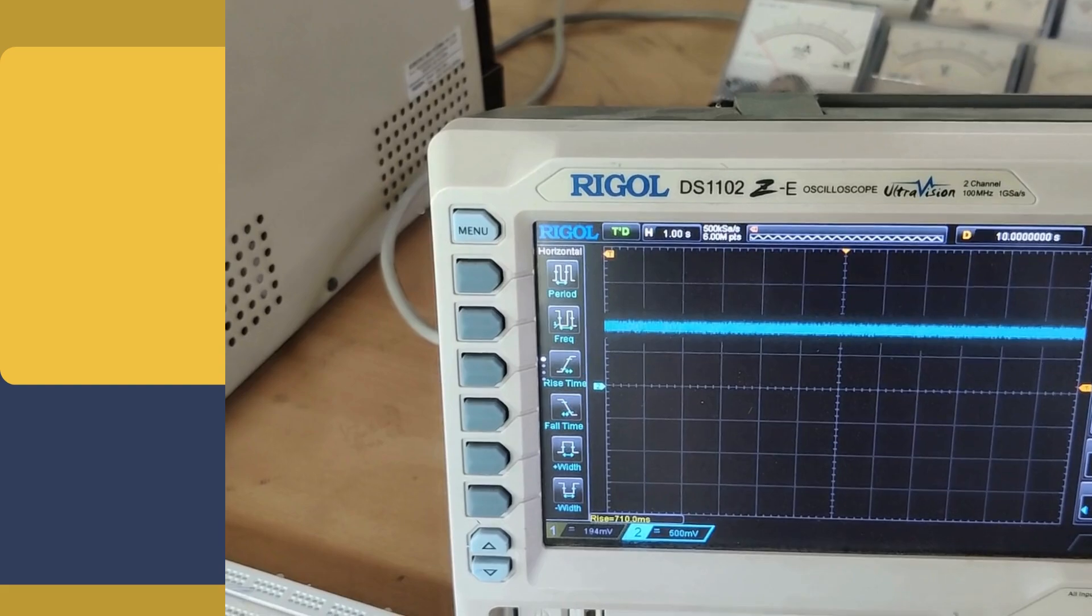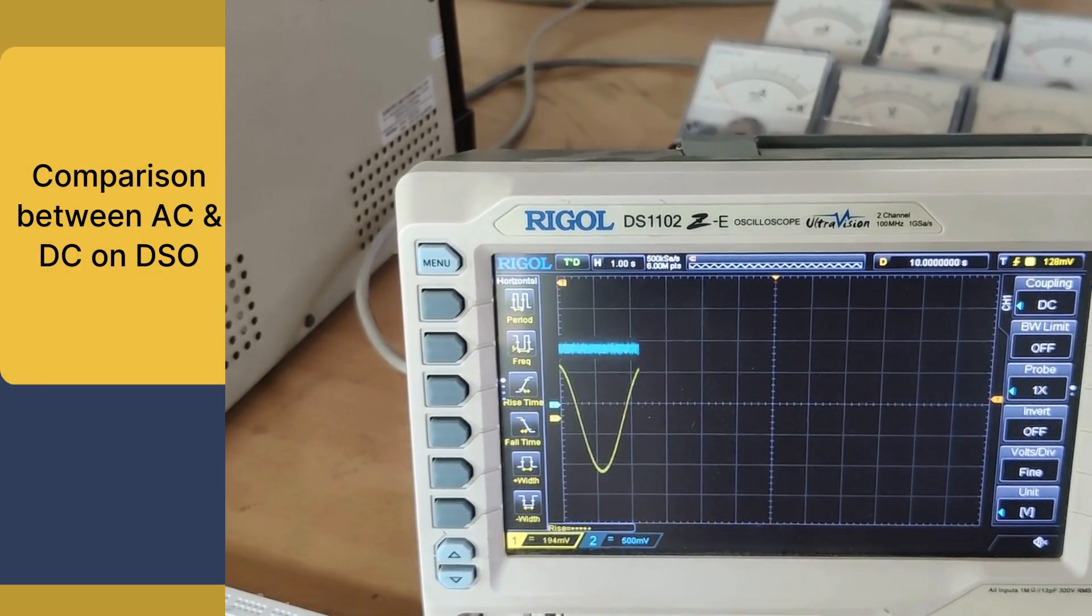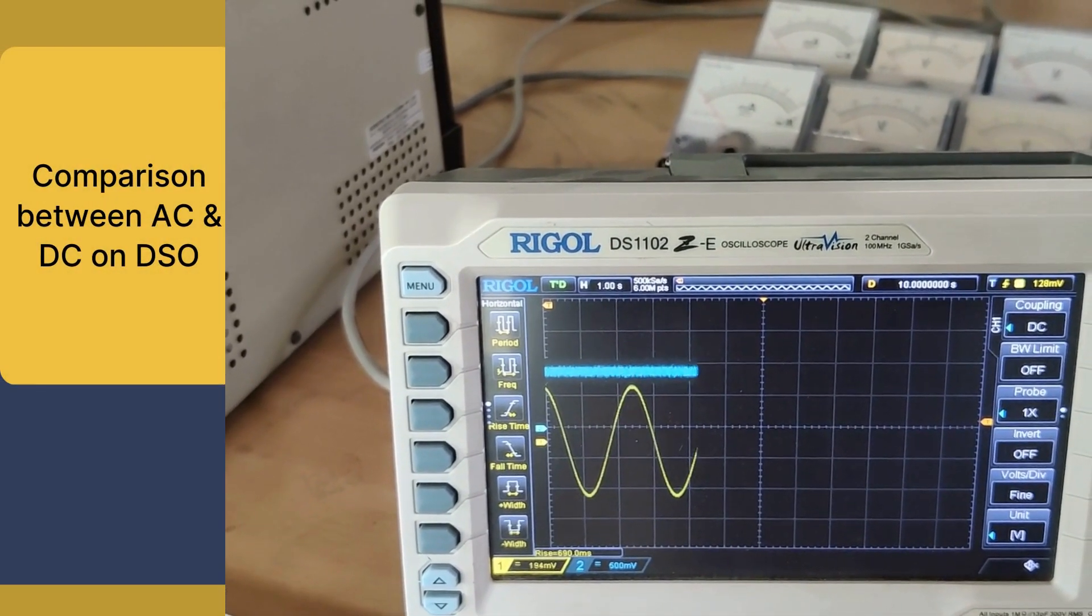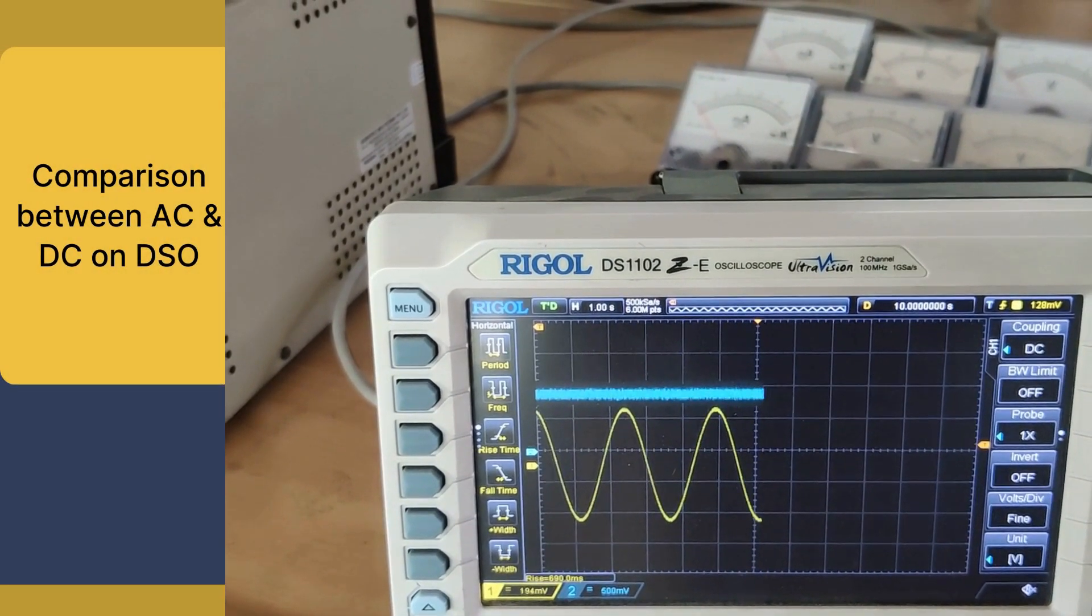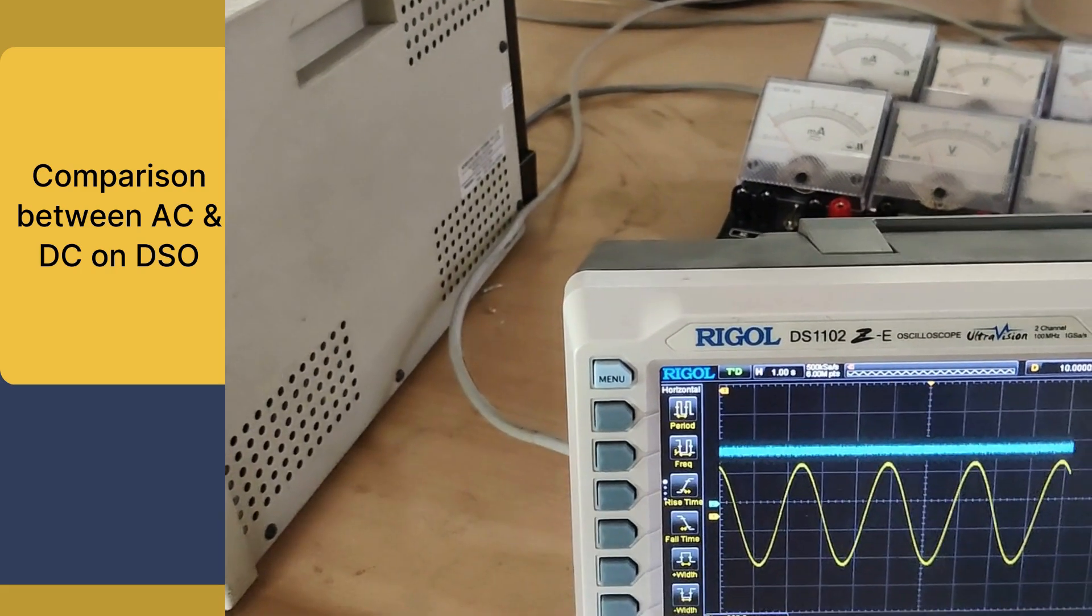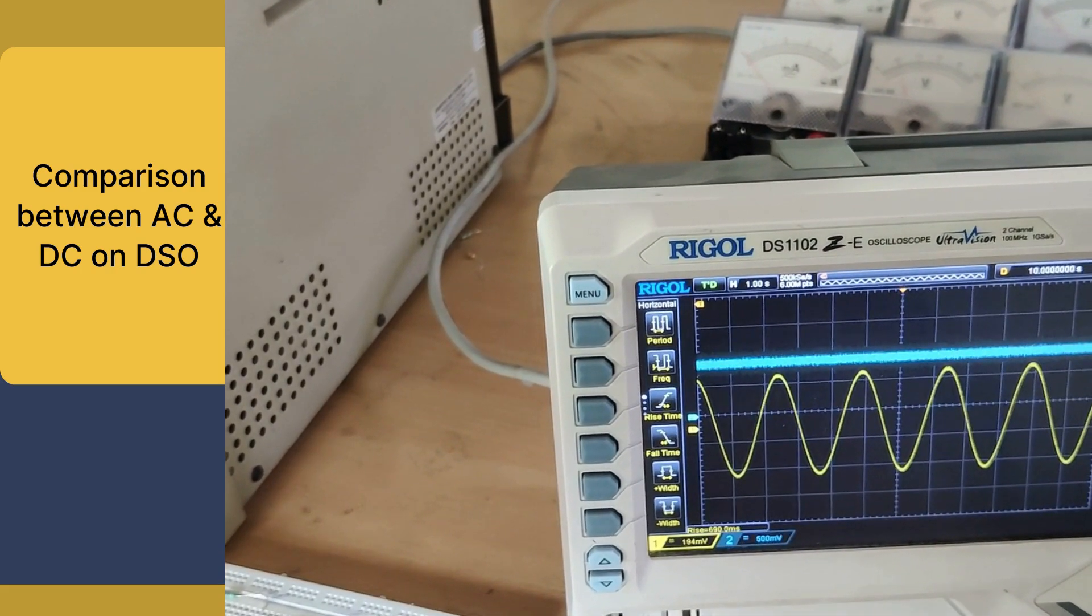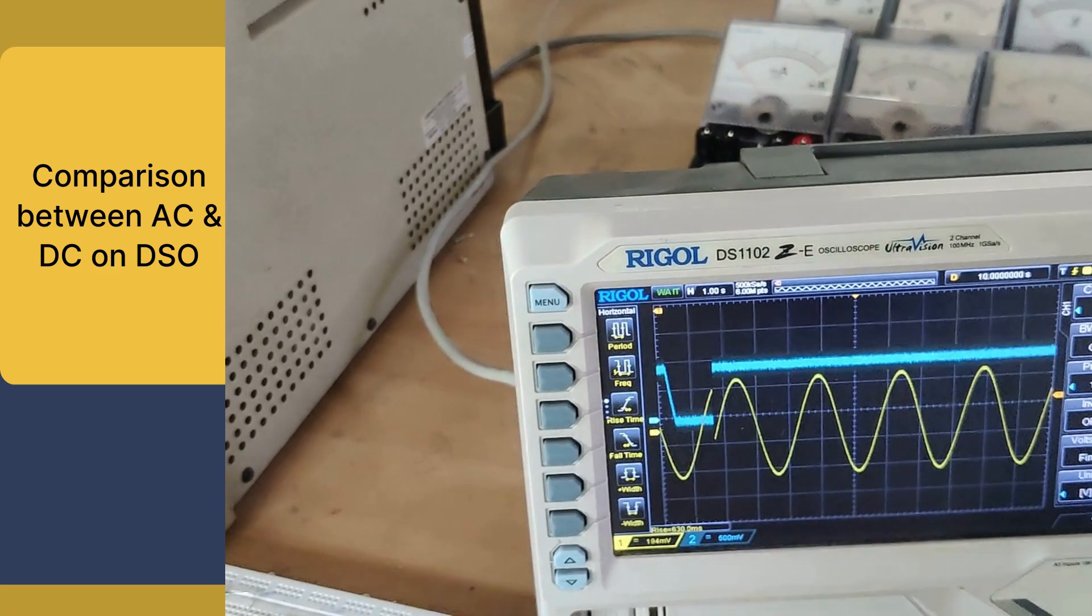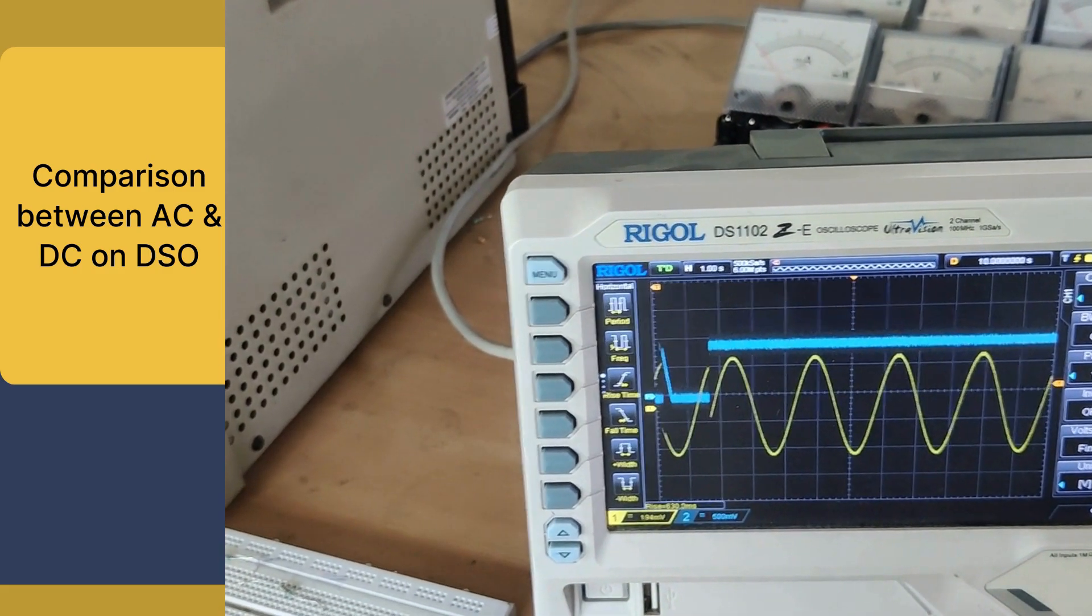You can see it indicating a constant voltage or current, but here is why it gets interesting. Now we are going to compare both AC and DC on a DSO. When we compare both AC and DC on the DSO, you are not just looking at the waves. You are seeing the very nature of how electrical power behaves and is transmitted. This is very interesting.